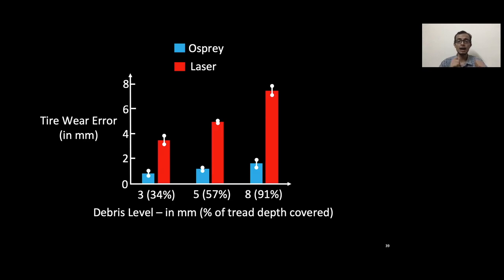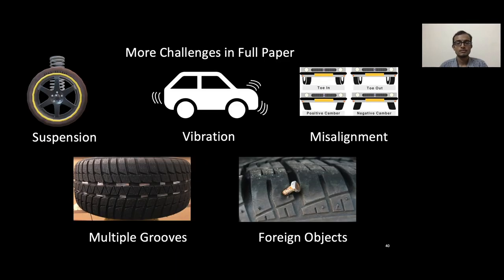Another result which we would like to share is the amount of resilience we have against debris. So when we put debris in the groove and vary its levels, and we benchmark the system against the laser-based system, the laser-based system has errors proportional to the debris level, but our system is much more resilient and has a maximum mean error of 1.5 mm when the groove is completely covered.